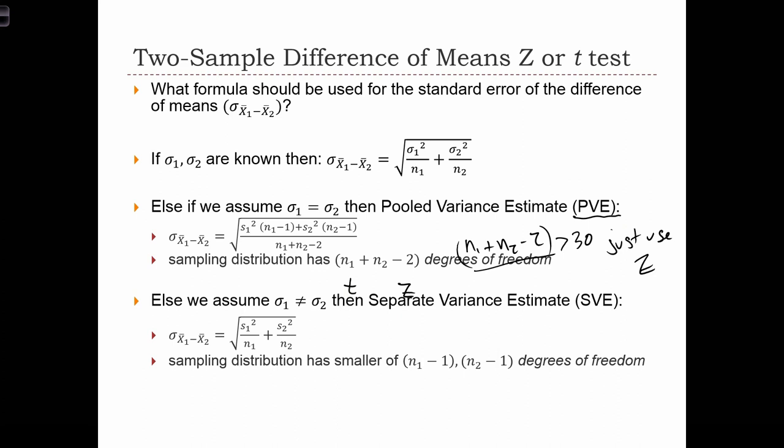The other option that we have is to assume that the two sigmas, the two population variances of the two different populations, are actually not equal to each other. In that case, we're going to apply what's called the separate variance estimate, the SVE. In here, we have the equation for the standard error of the difference of means, as just s1 squared over n1 plus s2 squared over n2, all rooted.